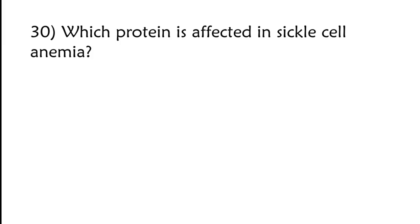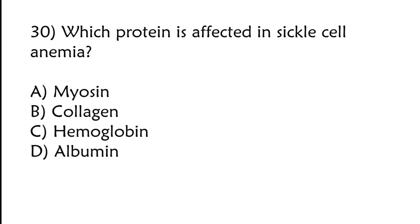Which protein is affected in sickle cell anemia? Myosin, collagen, hemoglobin, albumin? Correct answer is option C, hemoglobin.